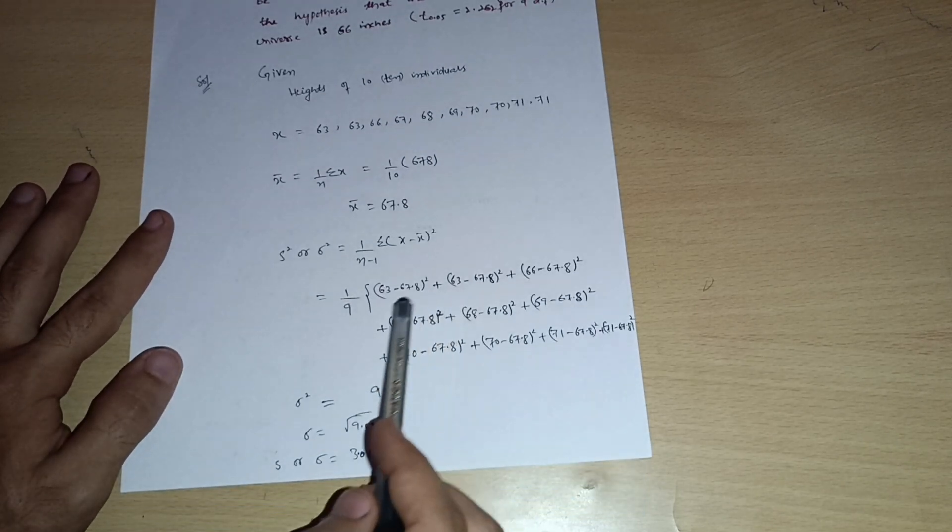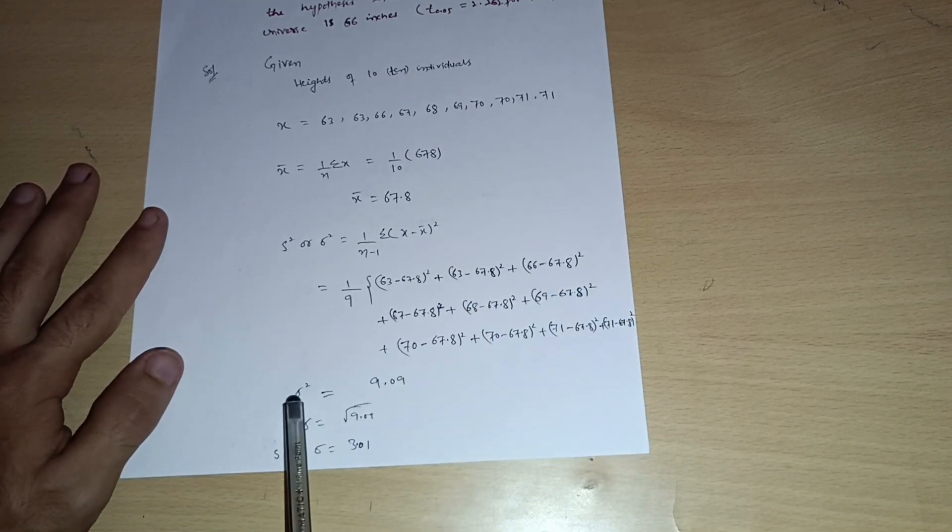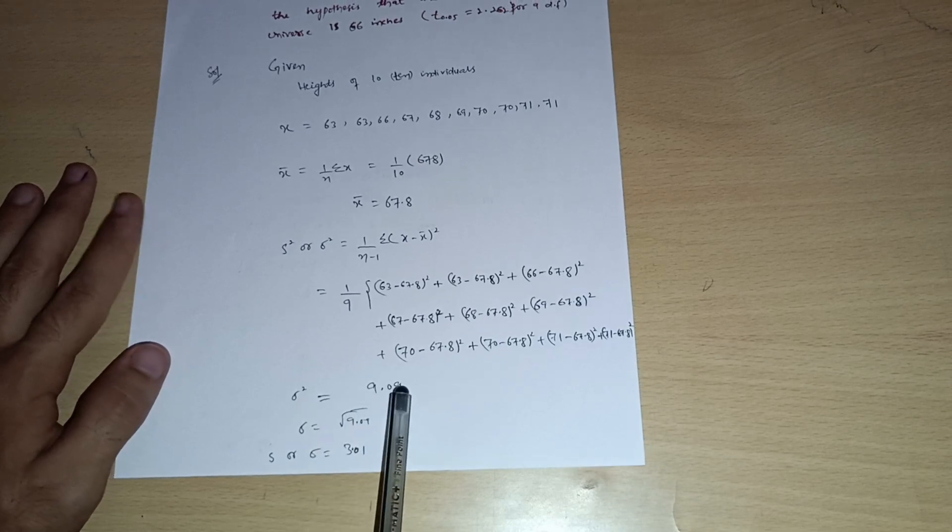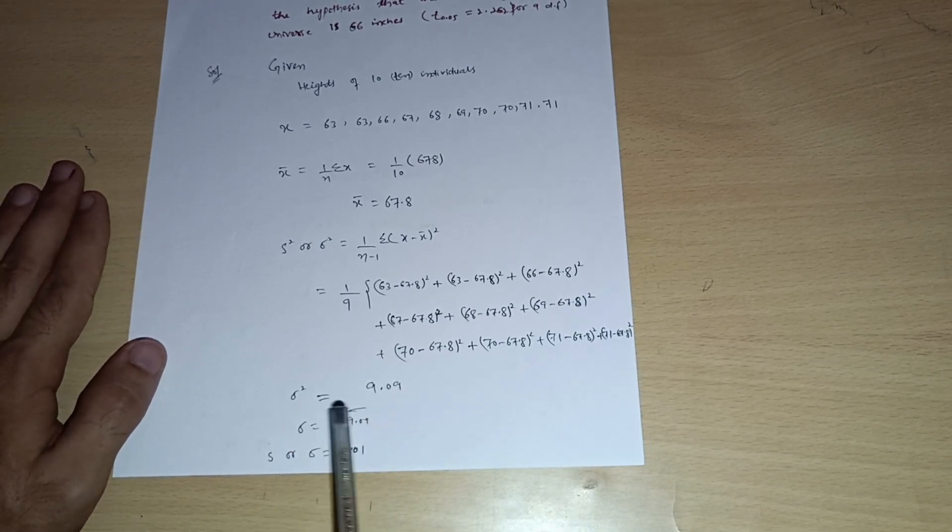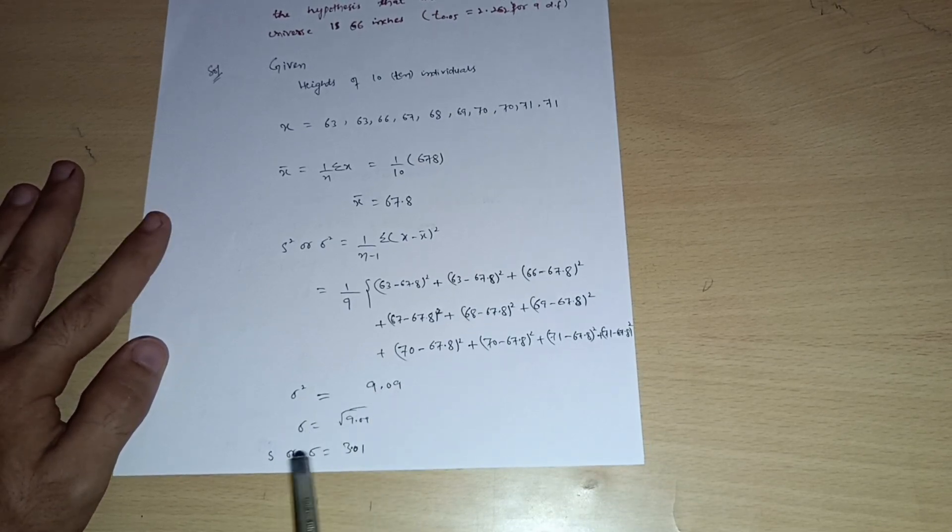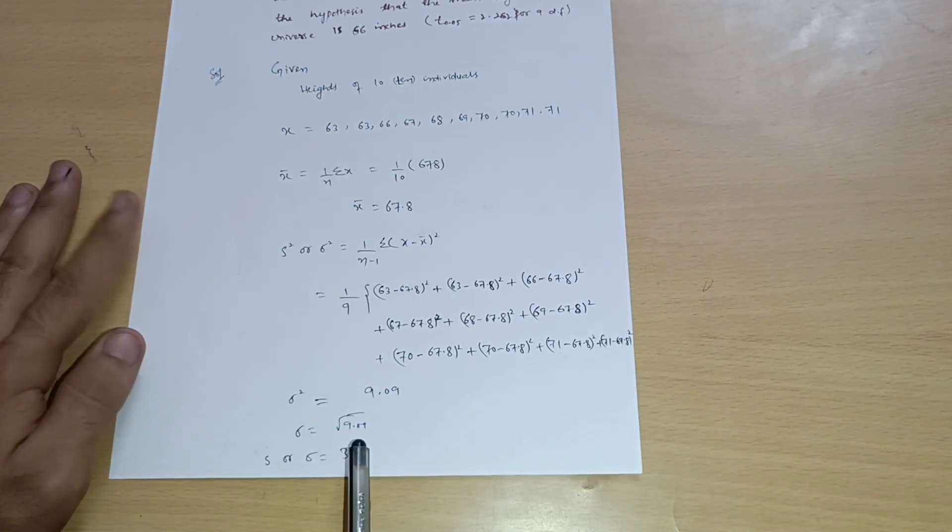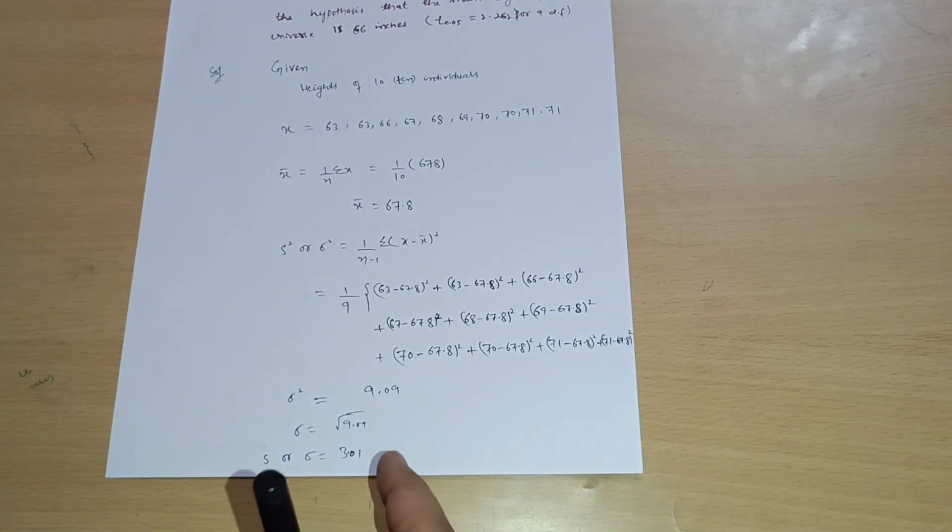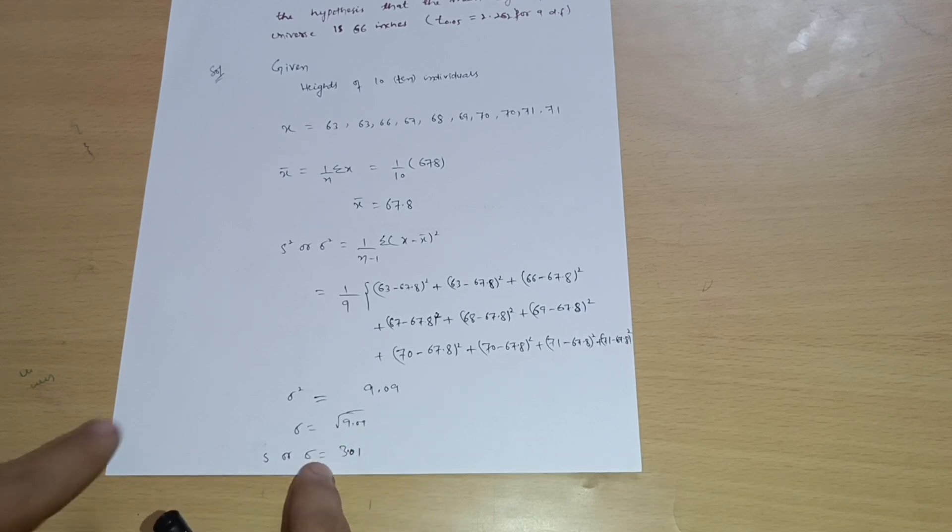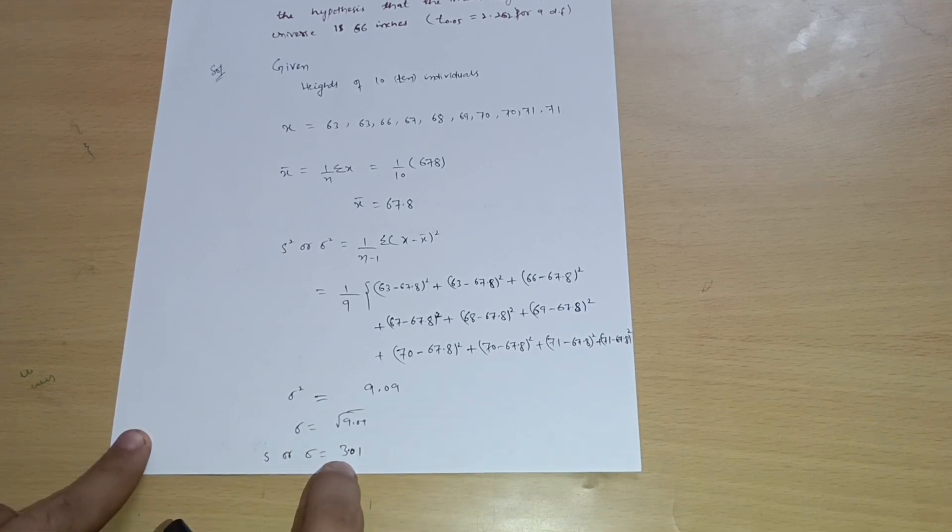While just summing up you will get sigma square is equal to 9.09, and sigma is equal to under root of 9.09. You will get sigma is equal to 3.01, or s is equal to simply 3.01. So this is the variance and standard deviation. Standard deviation we have calculated, 3.01.